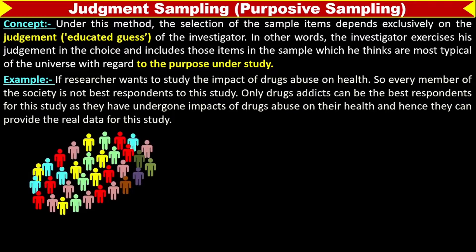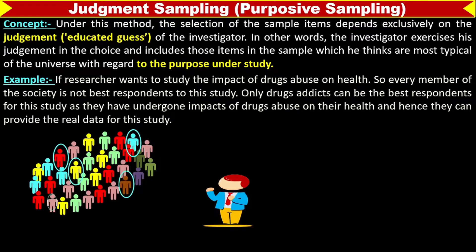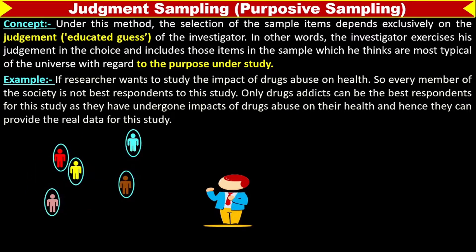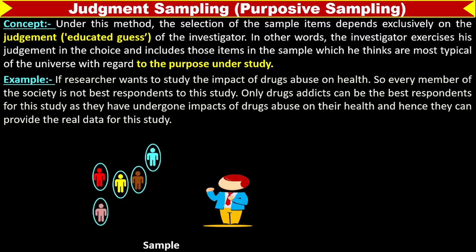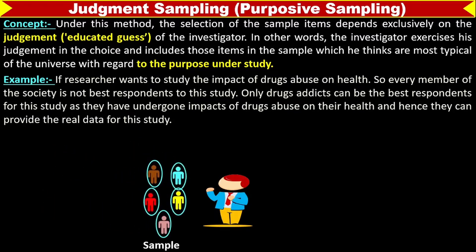For example, this is the population and the researcher is taking a sample. He has chosen these persons as a sample. So, that depends upon the judgment of the researcher.